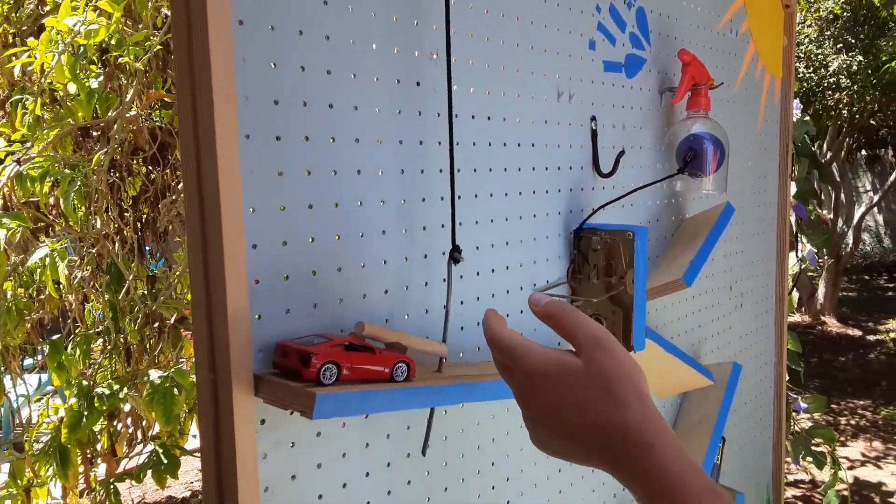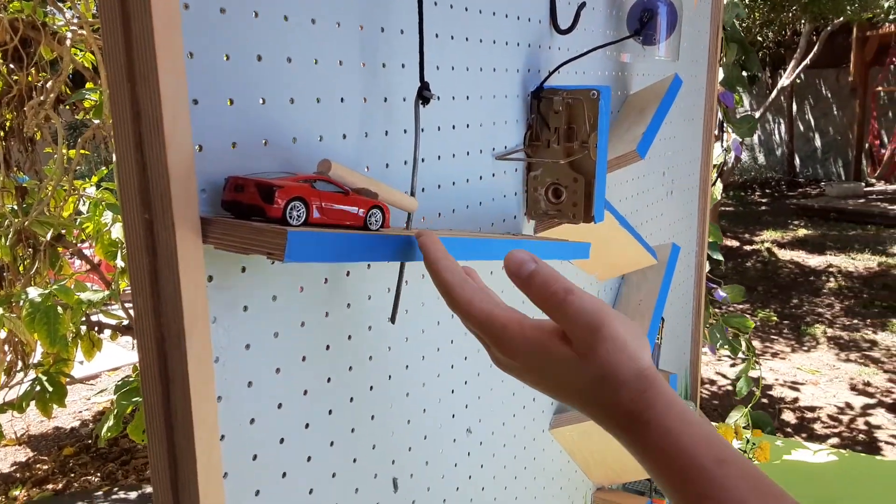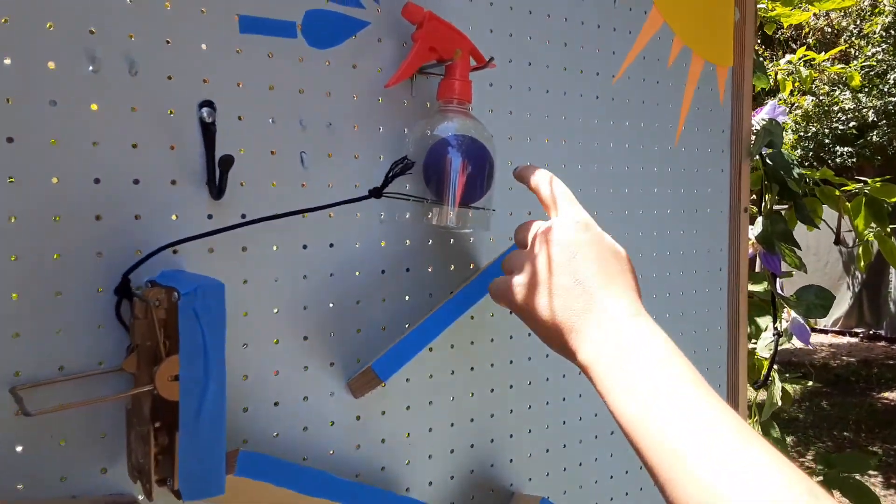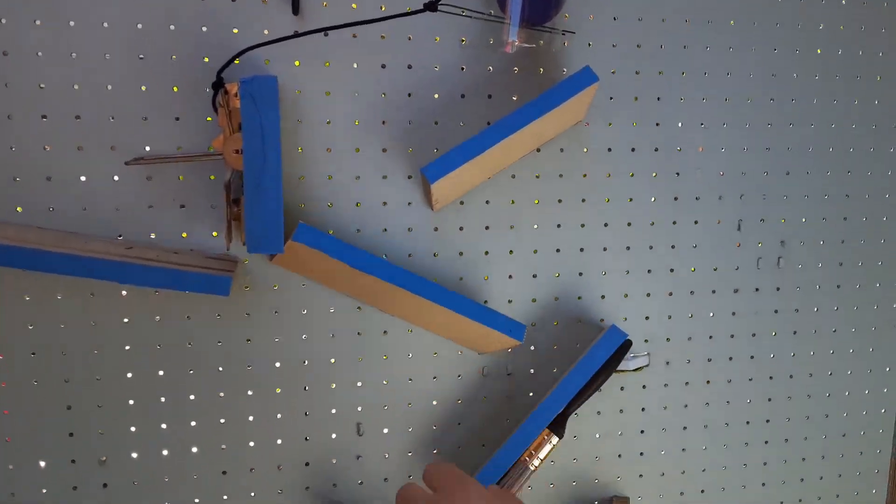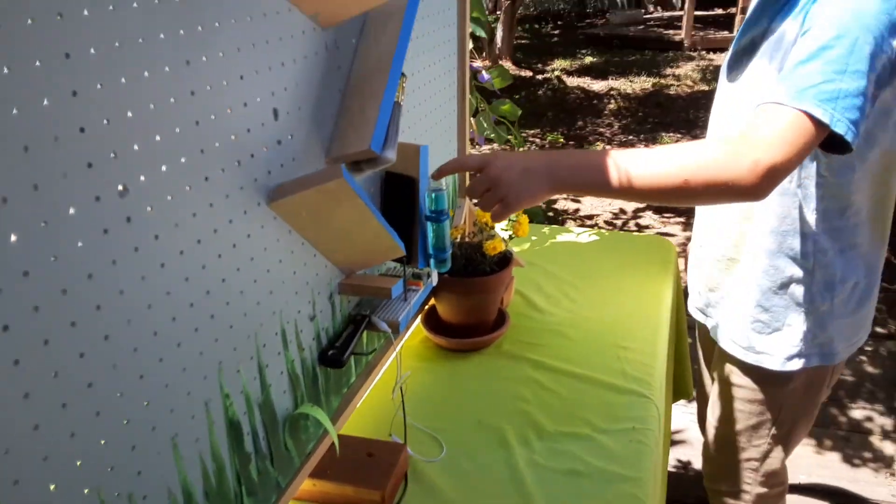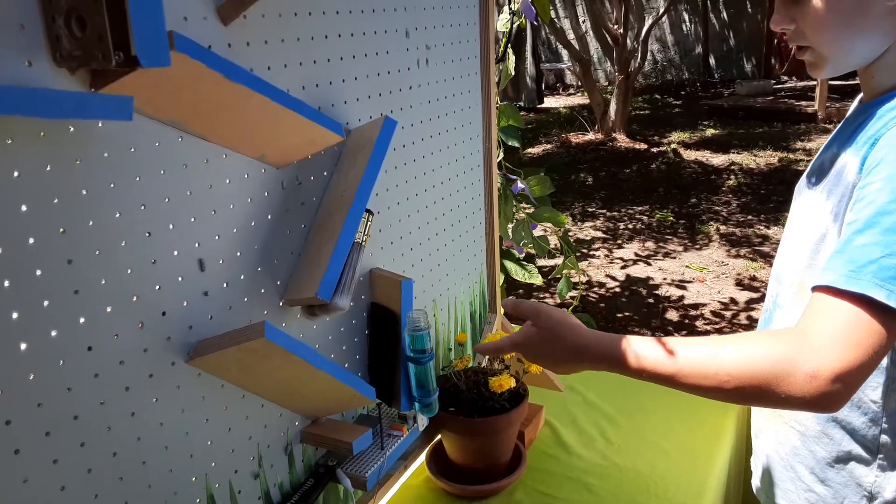That leads over the top to this pin, which releases this car into the rat trap, which pulls this pin out of this bottle and drops a ball down a cascade into the circuit, which is powered by this battery, which drops the water into the plant.